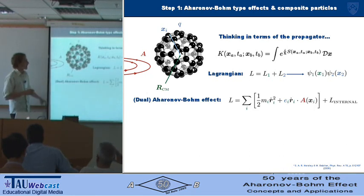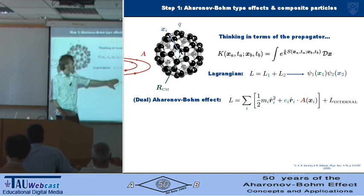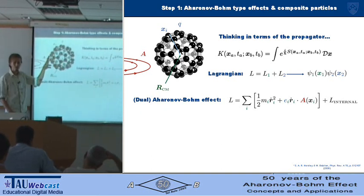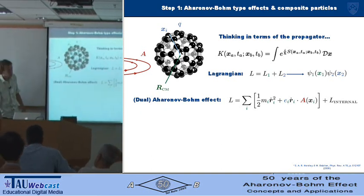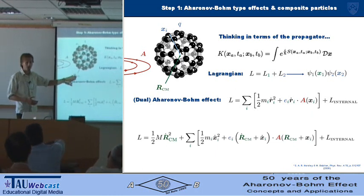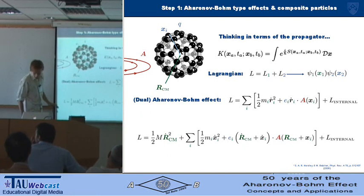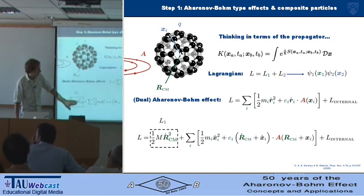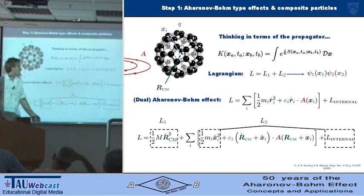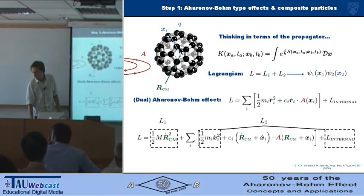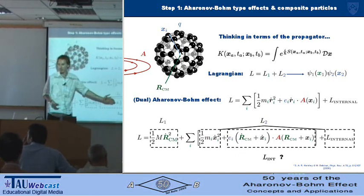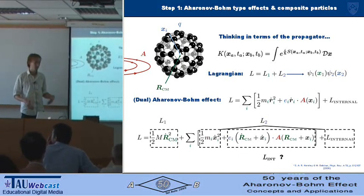So the full Lagrangian for this thing, non-relativistically, would be just the kinetic energy for the atoms, the Aharonov-Bohm interaction, and some internal Lagrangian that is holding the whole thing together. So if we expand that around the centre of mass—we're interested in the coherence of the centre of mass—it breaks into a few pieces: the centre-of-mass kinetic energy, the internal energy, the internal binding, and what looks like some kind of coupling between the centre of mass and the internal coordinates via the vector potential, even though it's without curl.